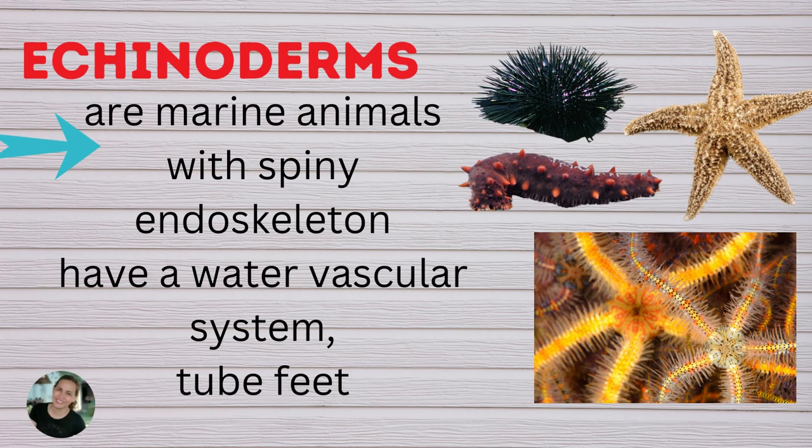Another group of invertebrates are echinoderms. These are marine animals with a spiny endoskeleton. They have a water vascular system and tube feet. Examples of this are starfish, brittle stars, sea cucumber, and sea urchins.